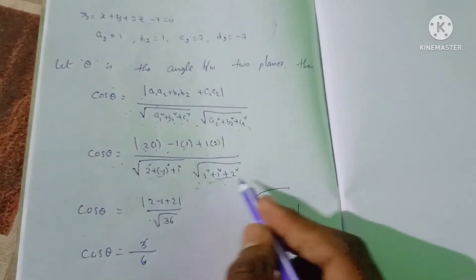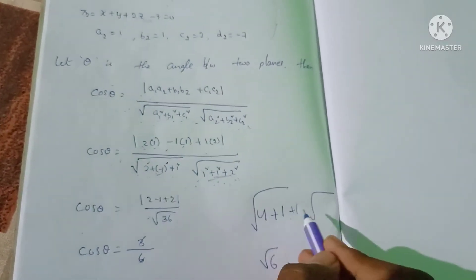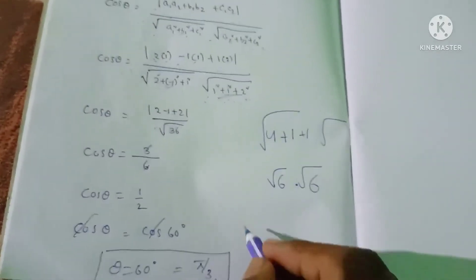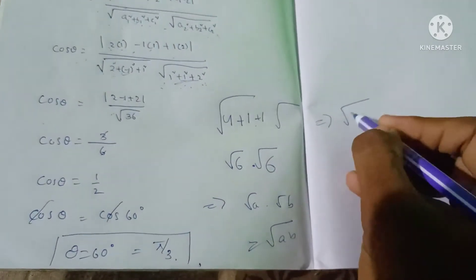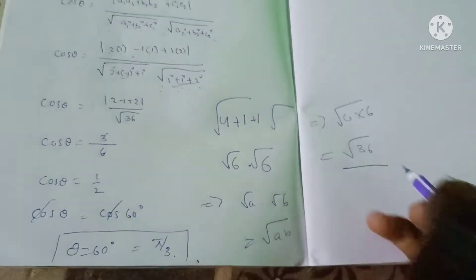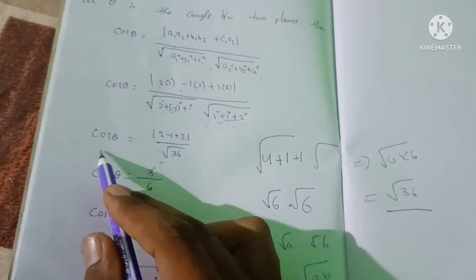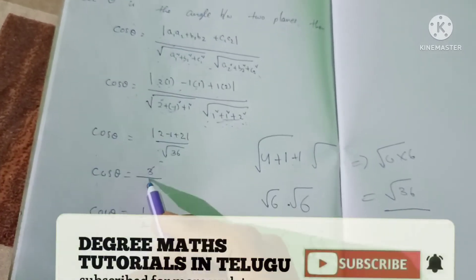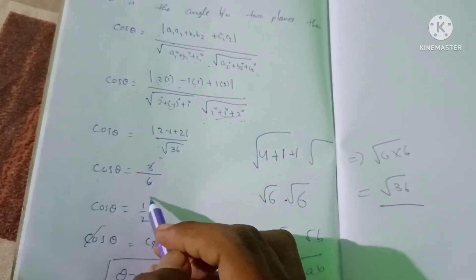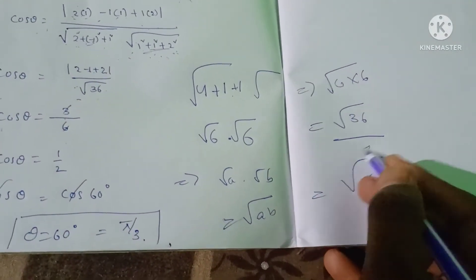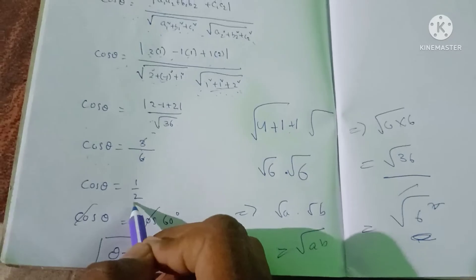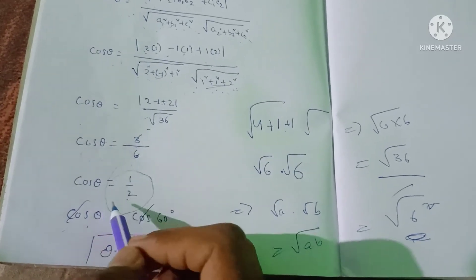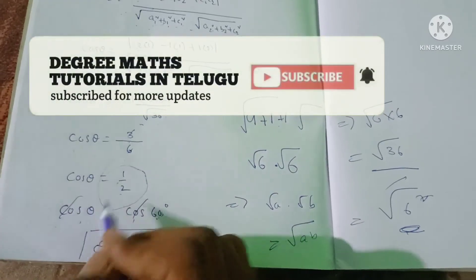Simplifying: the numerator is 2 - 1 + 2 = 3. The denominator is √6 · √6 = √36 = 6. So cos θ = 3/6 = 1/2. Since cos 60° = 1/2, cos θ = 1/2.